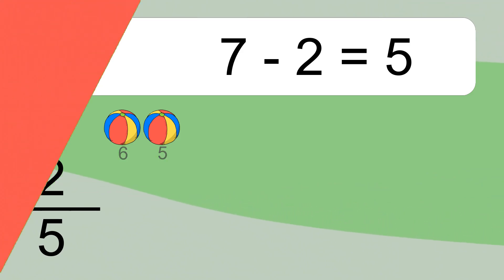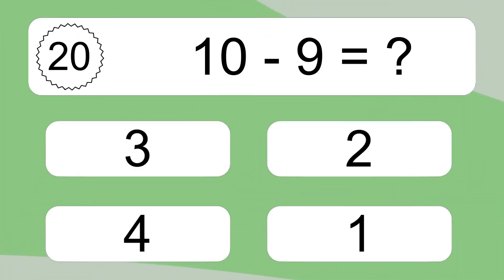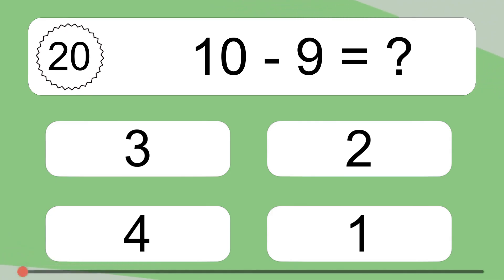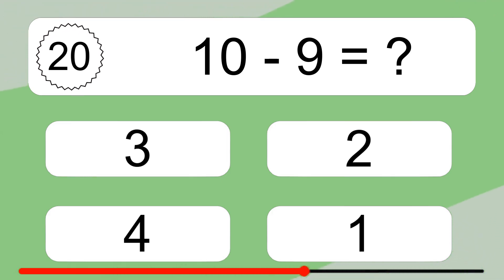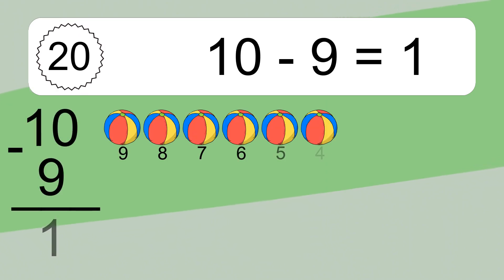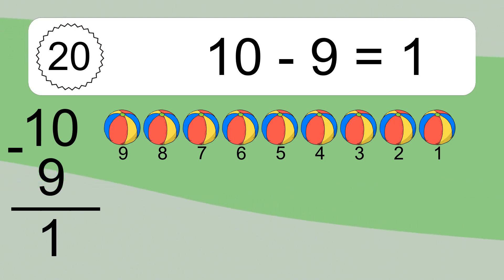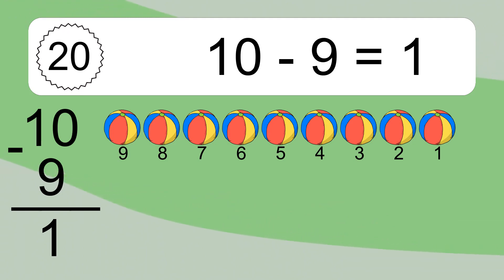10 minus 9 equals what? 10 minus 9 equals 1. Let's count it! 9, 8, 7, 6, 5, 4, 3, 2, 1.